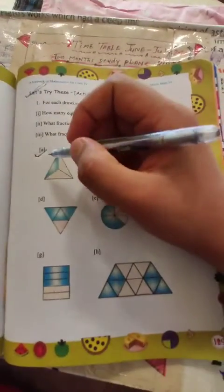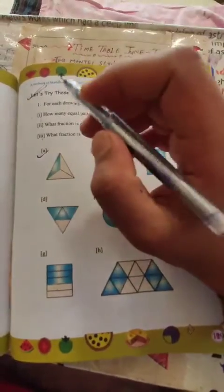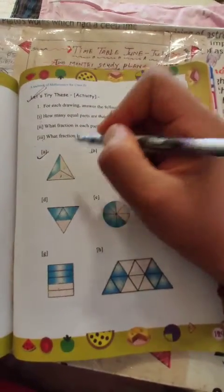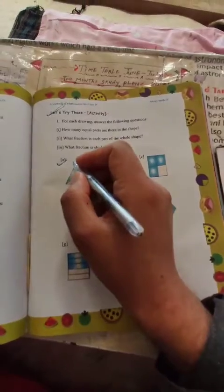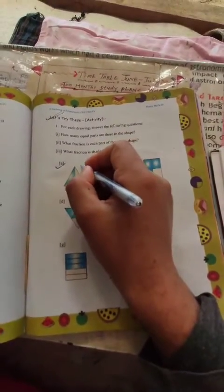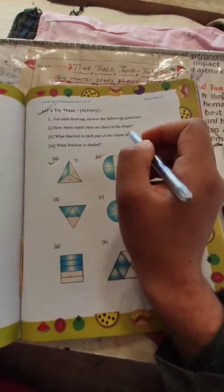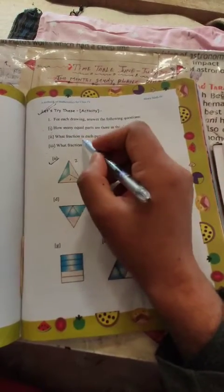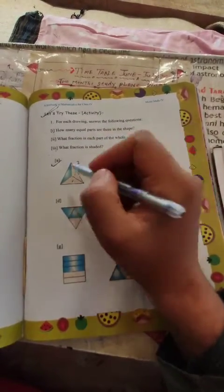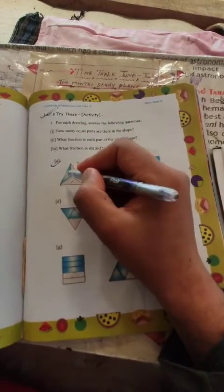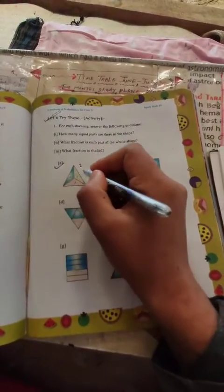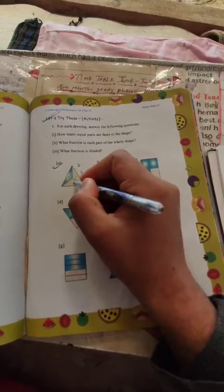Equal parts means the shape is divided into equal sections. We are going to count the parts. One, two, three. What fraction is each part of the whole? Each part is one-third, 1 by 3.